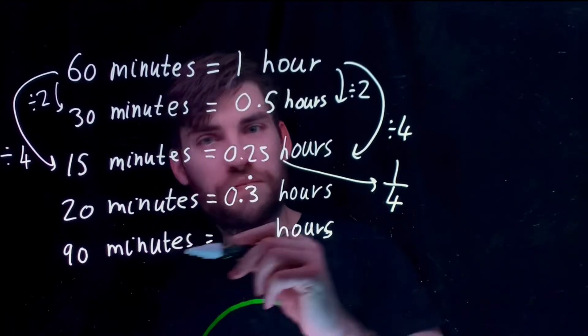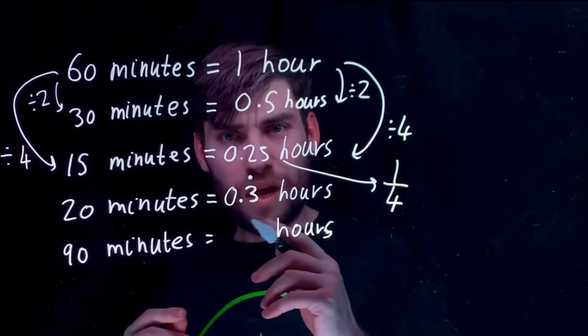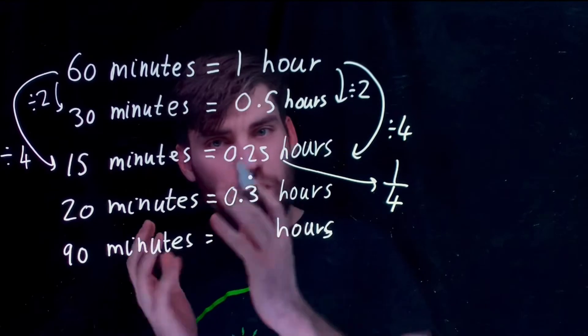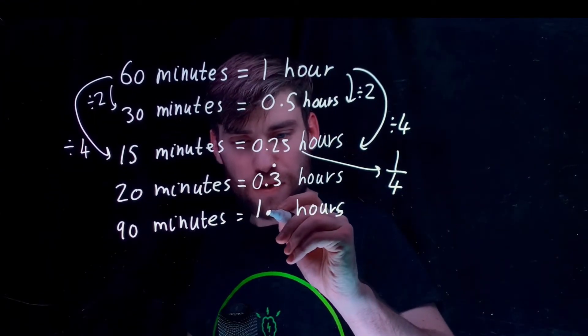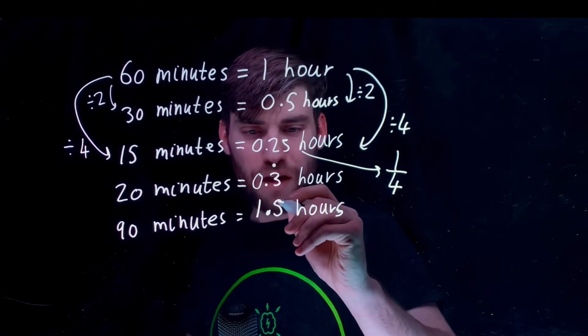90 minutes. So, you've got one hour and you've got 30 minutes left over. So, it's one and a half hours and you'll write that as 1.5 hours.